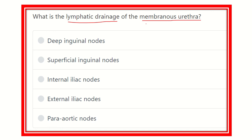We know that there are different parts of the urethra, such as the prostatic part, membranous part, and penile part. Among them, we have to find out the lymphatic drainage of the membranous part. The answer options are: deep inguinal lymph node, superficial inguinal lymph node, internal iliac lymph node, external iliac lymph node, and para-aortic lymph node.